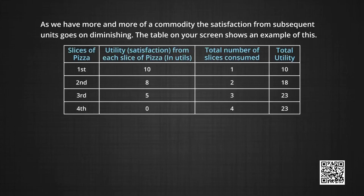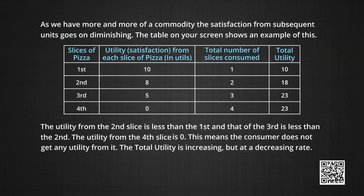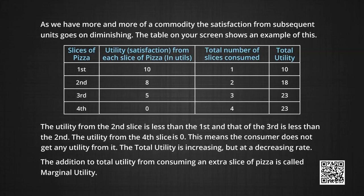The table on your screen shows an example of this. Notice, the utility from the second slice is less than that from the first, and that of the third slice is even less than that of the second. The utility from the fourth slice of pizza is actually zero, meaning the consumer does not get any utility from it. The total utility is increasing, but it is increasing at a decreasing rate. The addition to total utility from consuming an extra slice of pizza is called marginal utility — in other words, marginal utility is the addition to total utility for each unit increase in consumption.